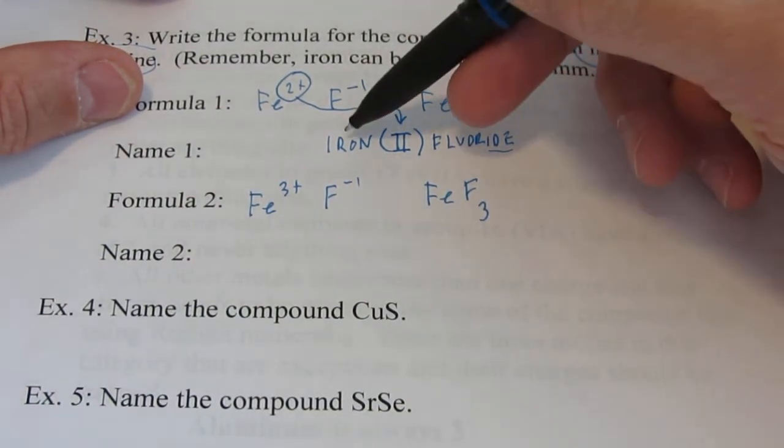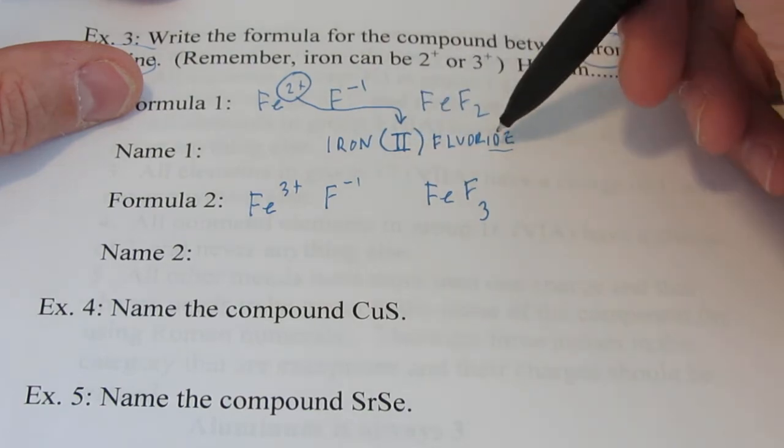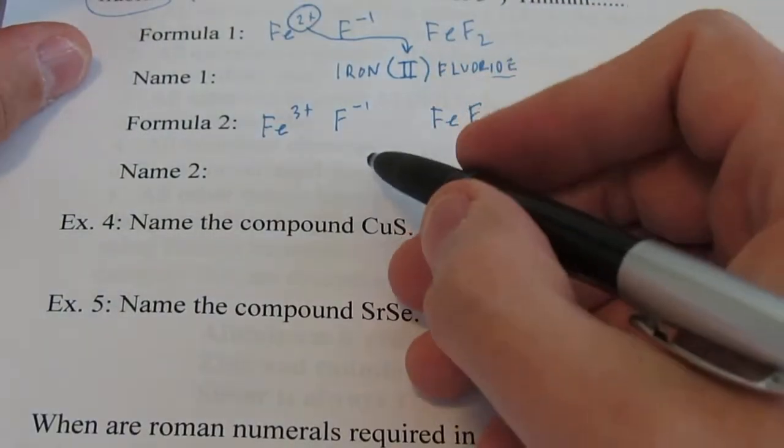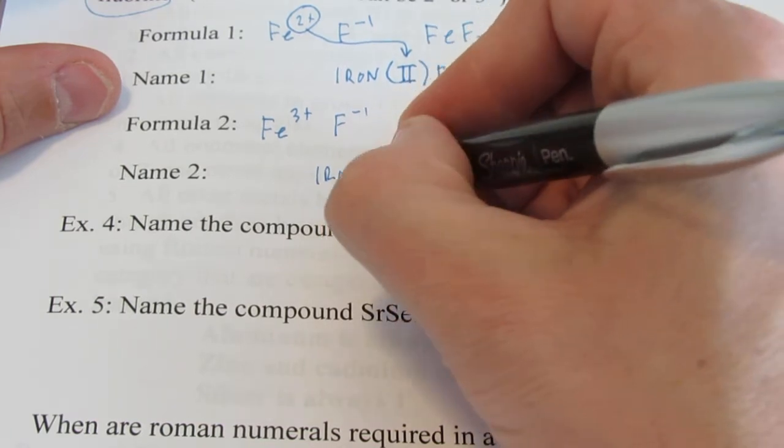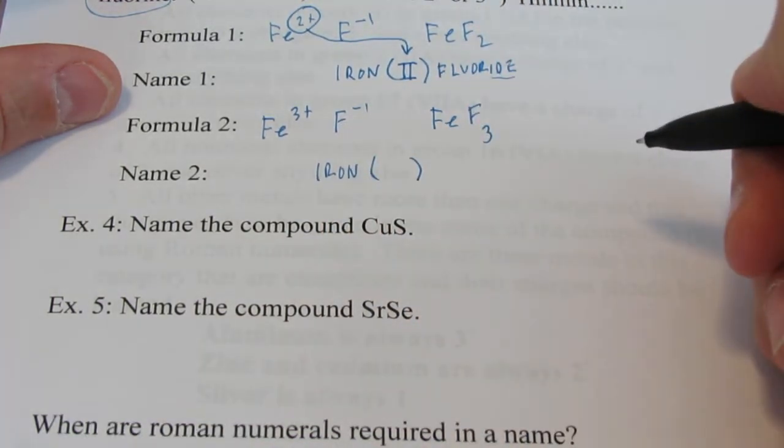Do you see that I still end with -ide? So the name of this compound, FeF2, would be called iron (II) fluoride. What would this one be called?